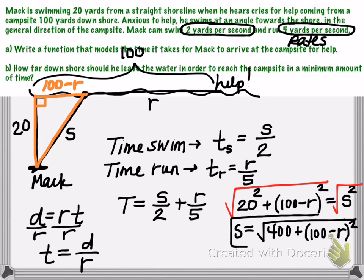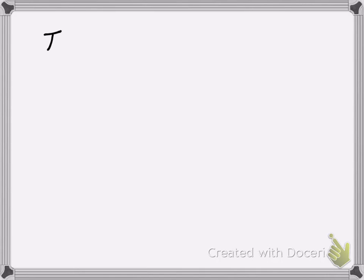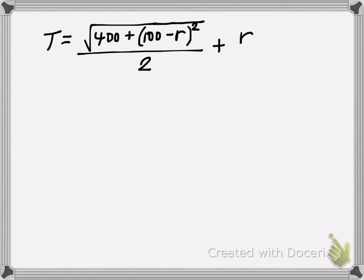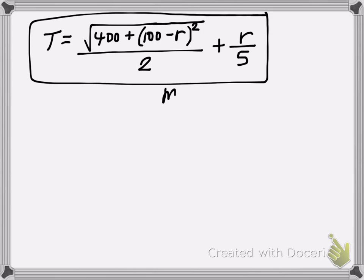Now we're going to take this equation for S and substitute it into my time equation. And then we'll just have an equation that has one input and one output. So we now have T equals the square root of 400 plus the quantity 100 minus R squared, all divided by 2, plus R over 5. So this is our model.